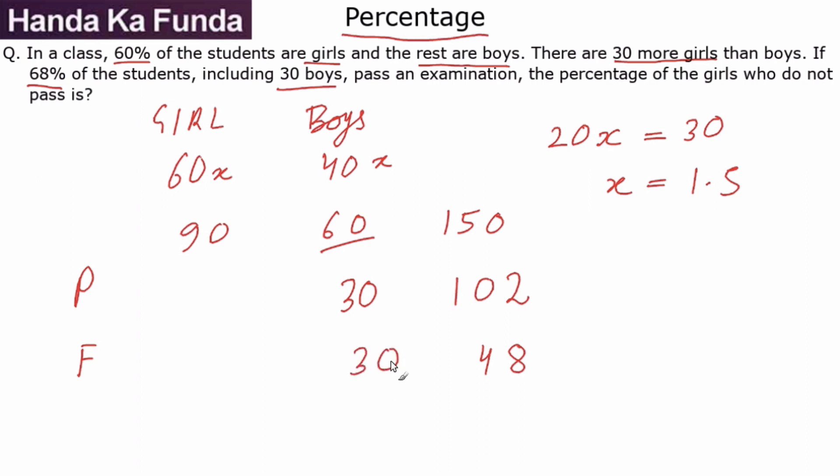Now total passing students is 102, out of which 30 are boys. That means the remaining 72 who have passed are girls. Very similarly, 48 students have failed, out of which 30 are boys, so the remaining 18 must be girls. So 18 girls have actually failed.